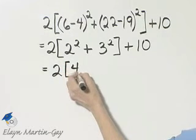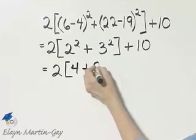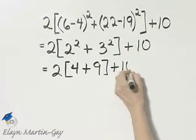2 squared is 4, plus 3 squared. That's 3 times 3, that's 9, then plus 10.